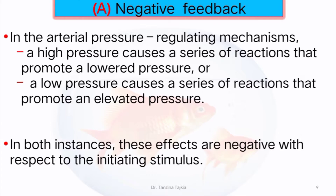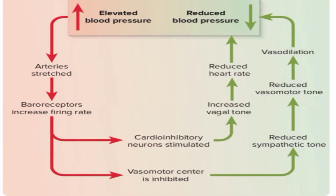Another example is in arterial pressure regulation. In the case of high blood pressure, a series of reactions promote lower blood pressure. Or a lower blood pressure causes a series of reactions that promote elevated blood pressure. In both instances, these effects are negative with respect to the initiating stimulus. This figure shows how elevated or lowered blood pressure returns to normal.